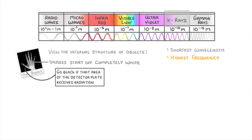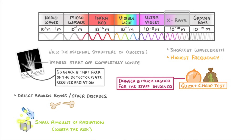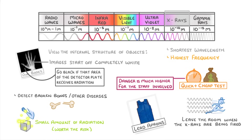We use X-rays to detect broken bones and other diseases, and although they do give the person a small amount of radiation which can be harmful, it's generally such a low dose that it's worth taking the risk. It's also a very quick and cheap test. The danger is much higher for the staff involved, though, and so they generally wear lead aprons to stop the X-rays and leave the room when the X-rays are being fired.